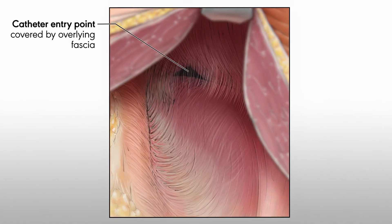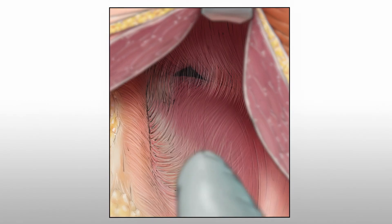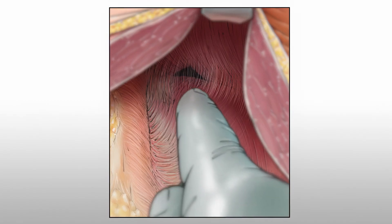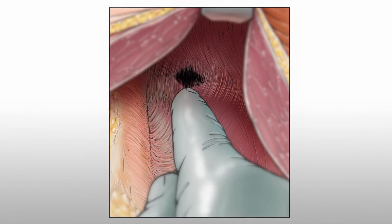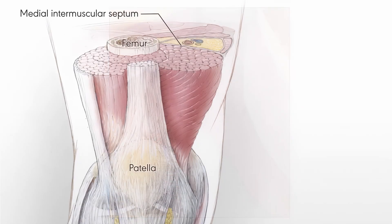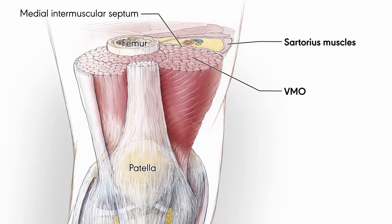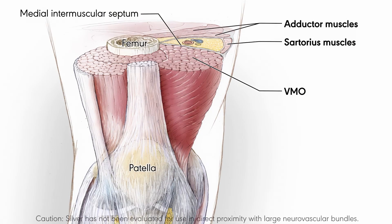The catheter entry point is covered by thin layers of overlying fascia, which should be bluntly dissected digitally prior to catheter insertion. The VMO, the sartorius, and the adductor muscles form the muscular borders of the adductor canal.